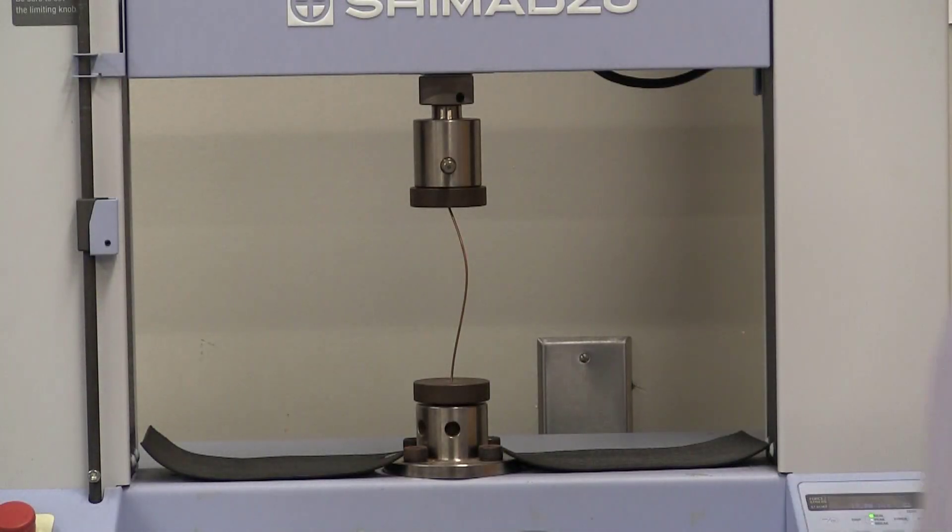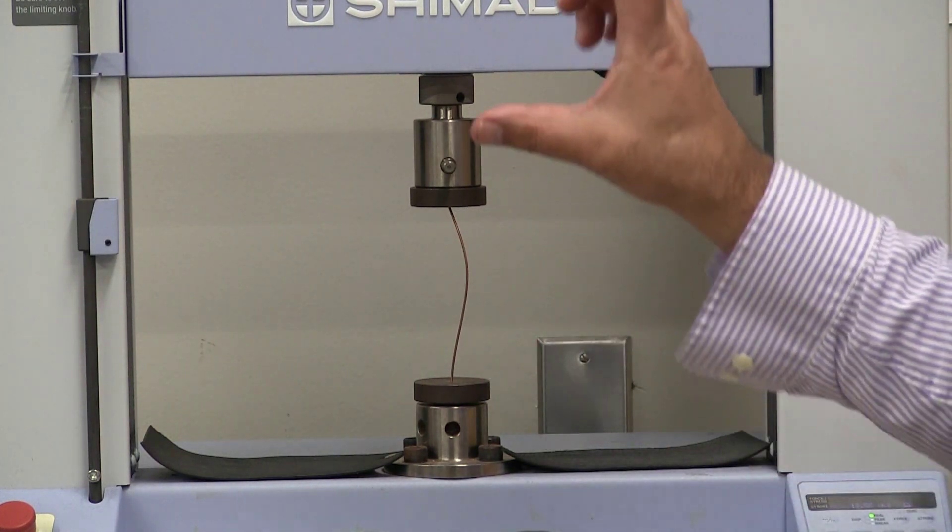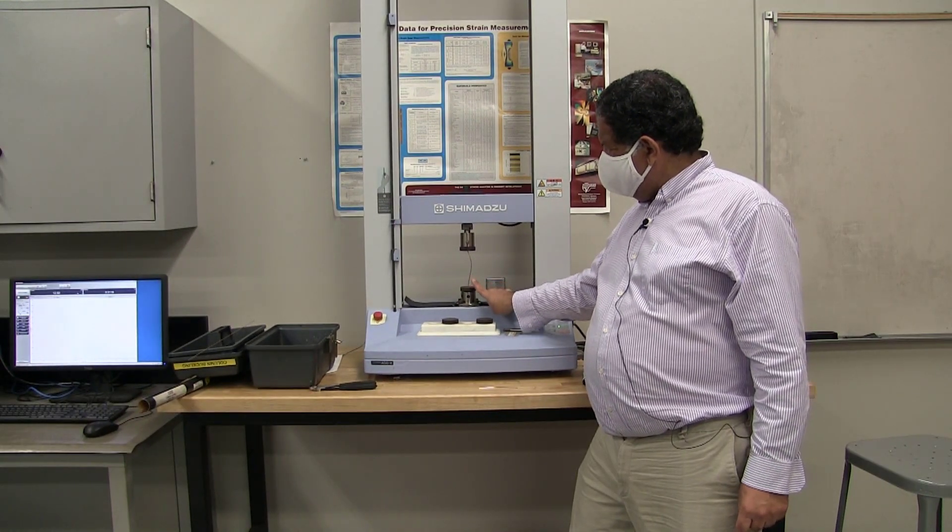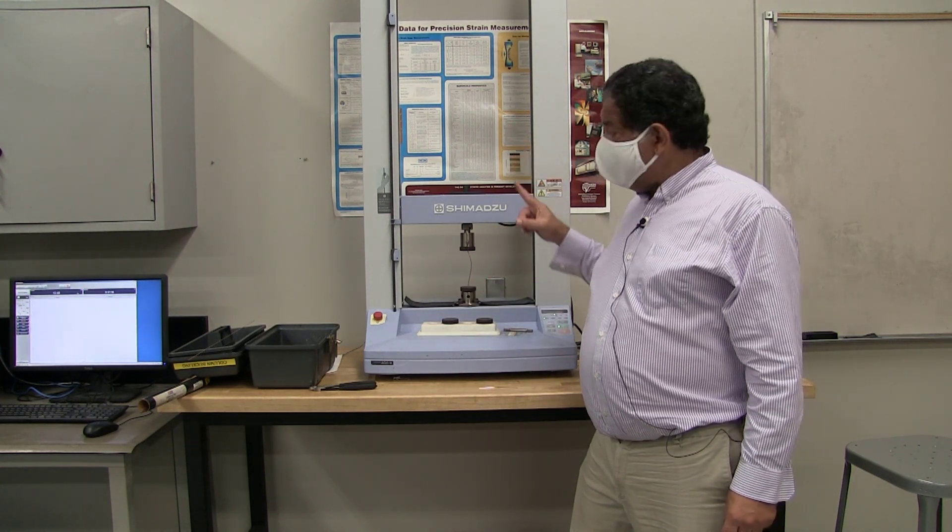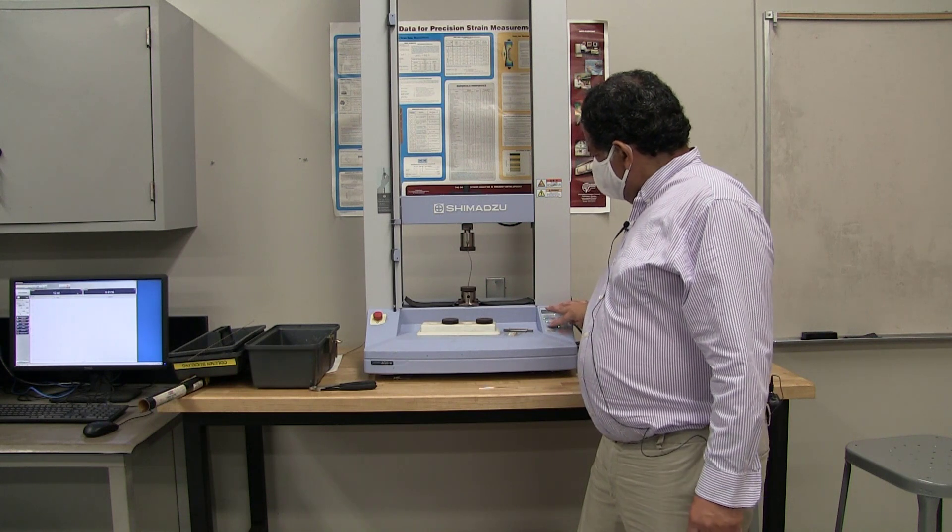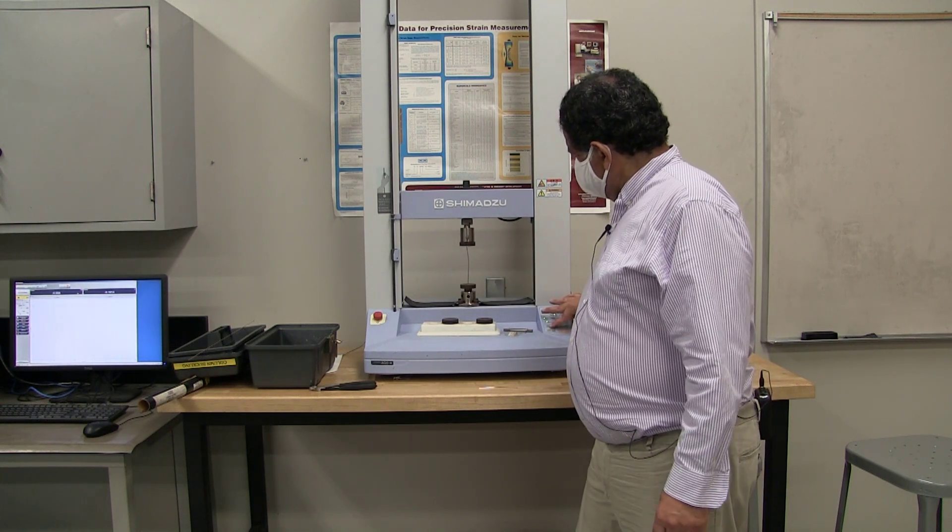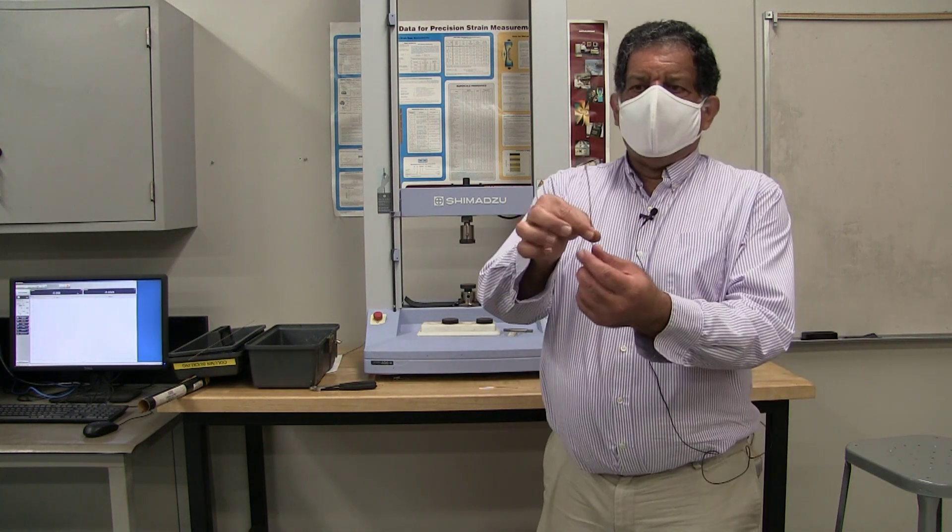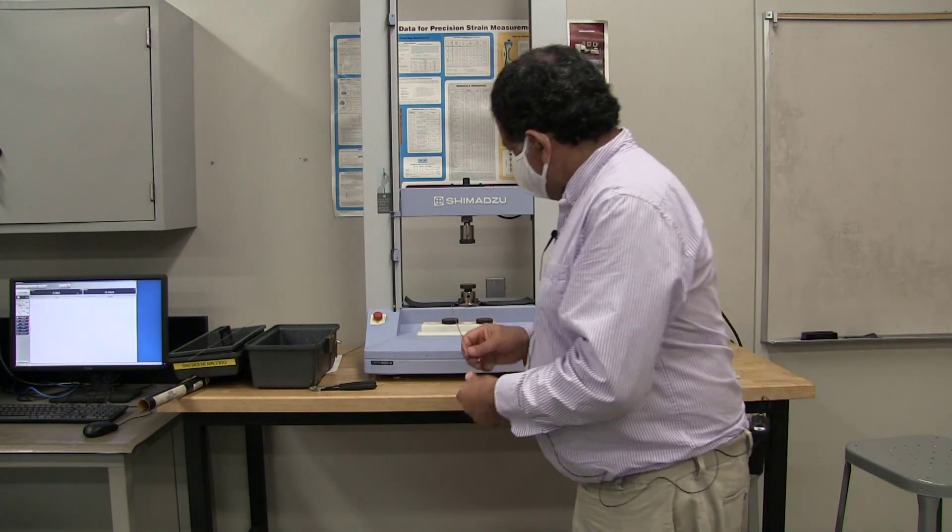You'll notice that the shape of the buckle is different than it was in the pin-pinned case. It was symmetric. It was a half sine wave. In this case, at the fixed end, it's coming straight up out of the bottom. At the pinned end, it's got an angle to it, so the shape is different. Let's unload the specimen and extract it. You can see that the maximally bent buckled portion is not symmetric.